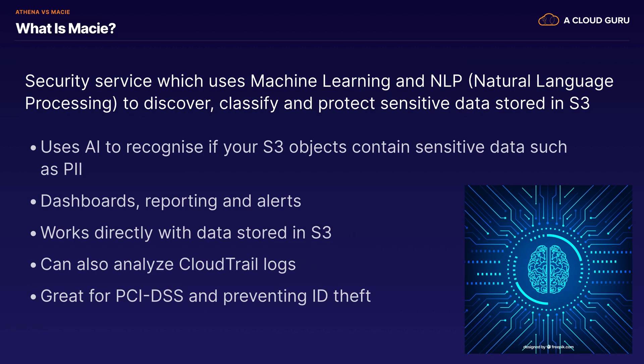What is Macie? Macie is a security service that uses machine learning and natural language processing, or NLP, to discover, classify, and protect sensitive data stored in S3. It uses AI to recognize if your S3 objects contain sensitive data such as PII. It basically gives you dashboards, reporting, and alerts, and works directly with the data stored in S3.